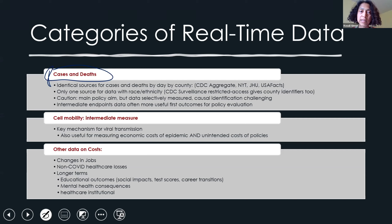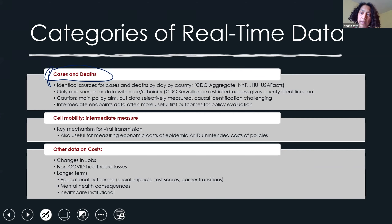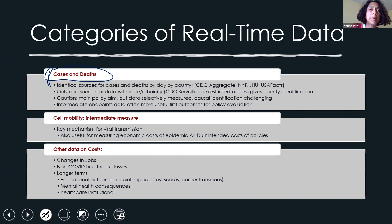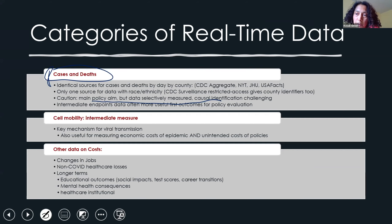One of the papers we have is comparing between these data sources to understand the extent of missingness in the CDC surveillance data. When thinking about cases and deaths, we know cases were not being collected in a random way that would give us a sense of what the population prevalence is. And deaths — we know there were a lot of deaths early on that were COVID but were not being recorded as COVID. So we want to talk about intermediate endpoint data that we think for policy evaluation it's very important to look at: did the policy have an impact on how people behaved, and then be able to say what was the impact on cases and deaths.